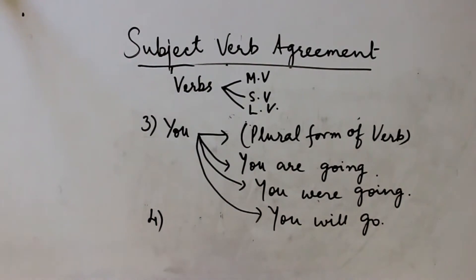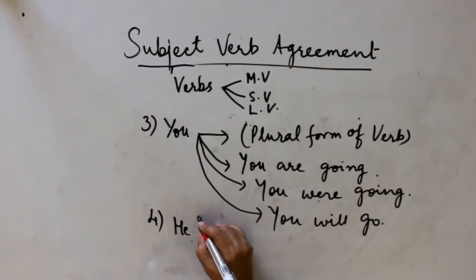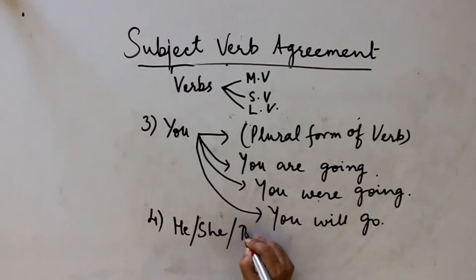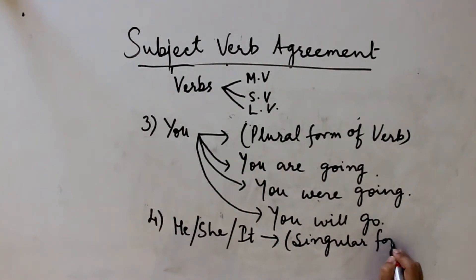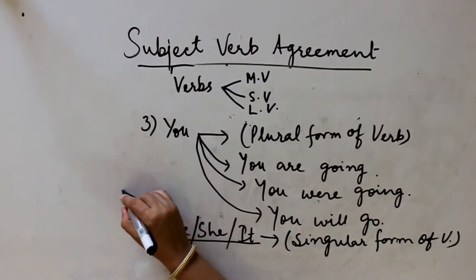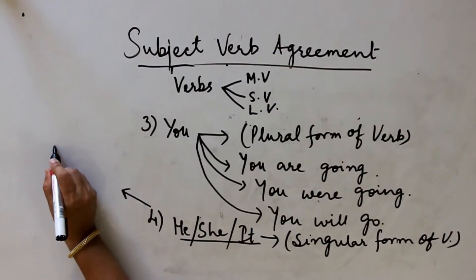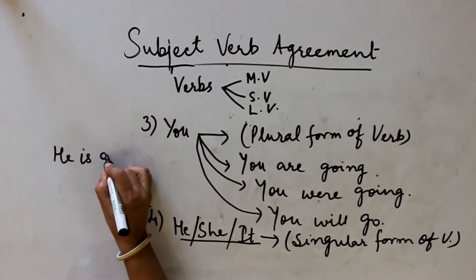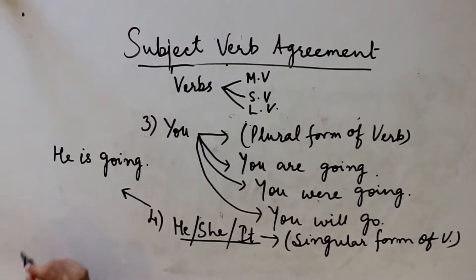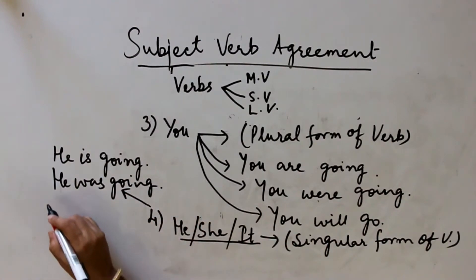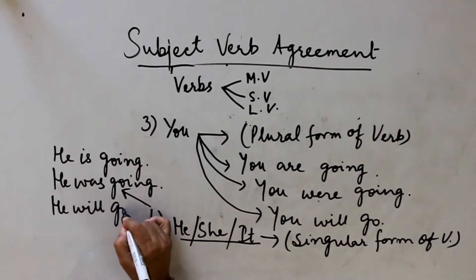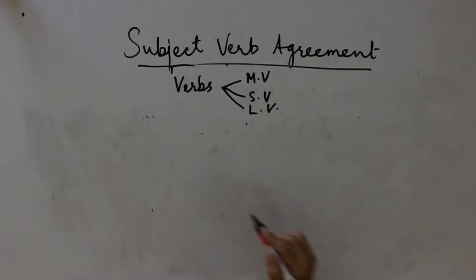Next we come to the third person singular number. Here, as I told you, we have 'he,' 'she,' and 'it.' With all these, we will use the singular form of the verb. So my sentence will be: 'He is going' — this is in present tense. 'He was going' — this is in past tense. 'He will go' — this is in future tense. And last is 'they,' which is the plural form of the third person.